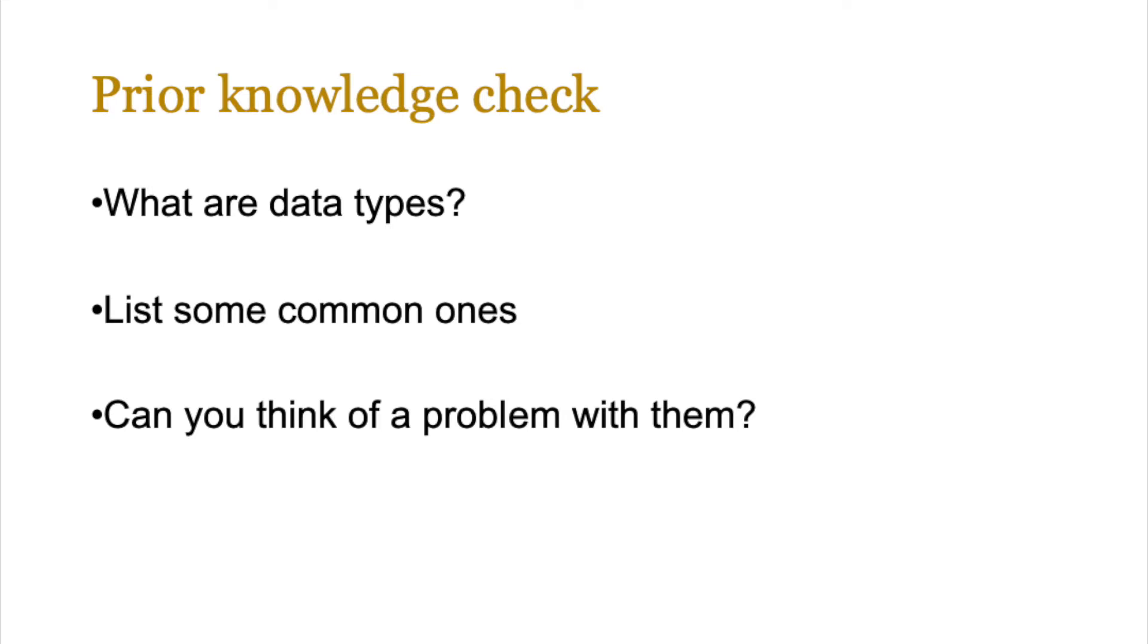Most students will just quickly list some common data types and they're going to be saying things like integer, boolean, string, real, I know them. But what they struggle with is the definition of what a data type is. Now quite simply a data type is basically a classification attributed to an item of data and that determines the type of value it can store and how it can be used. For example integer can store whole numbers and can be used in calculations.